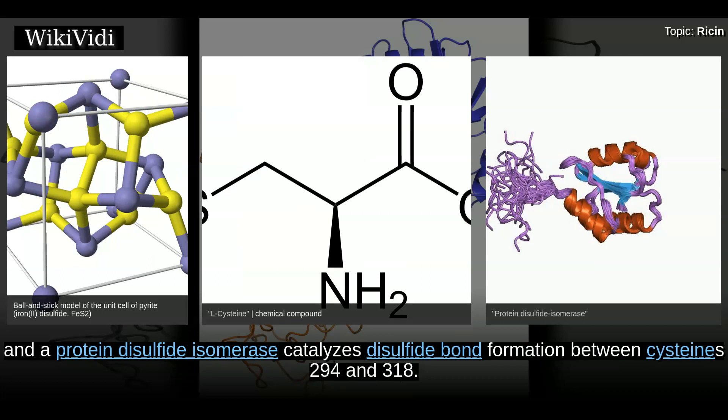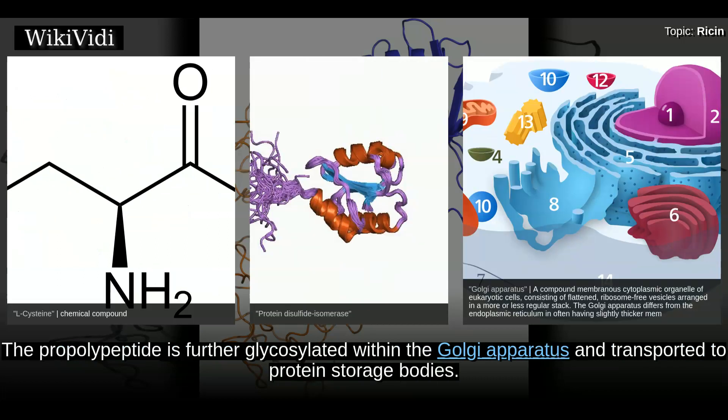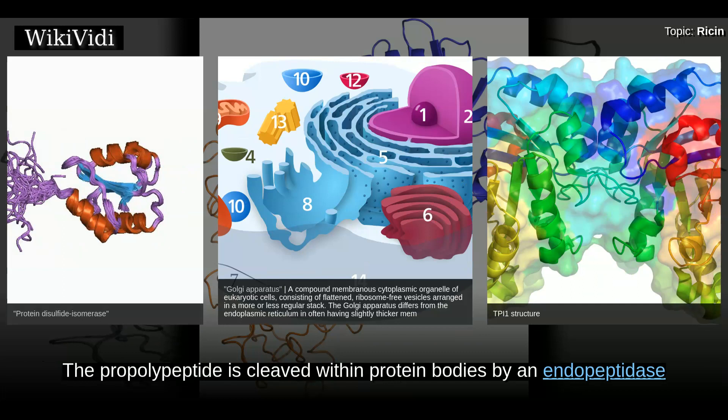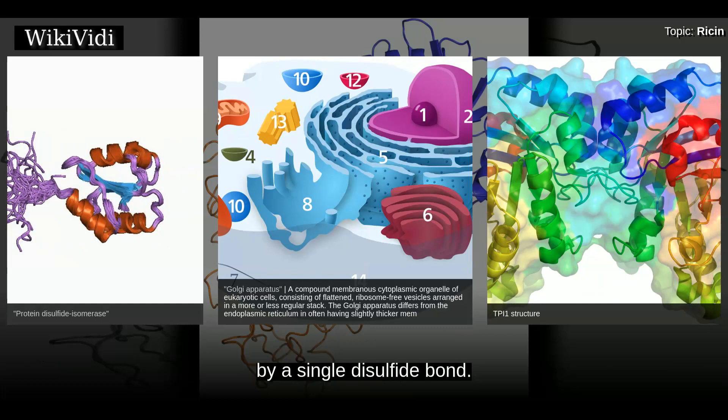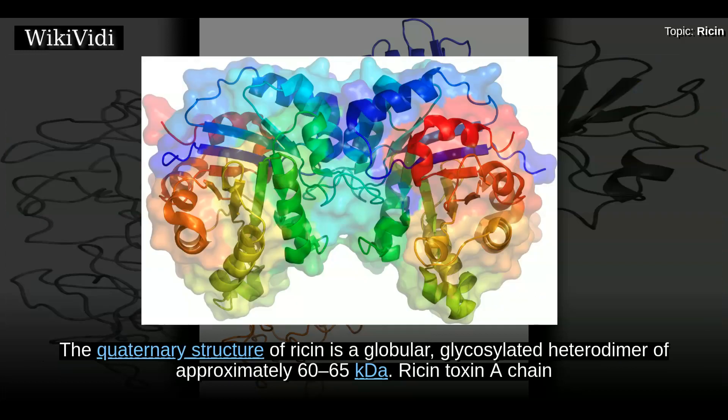Within the lumen of the ER, the propolypeptide is glycosylated and a protein disulfide isomerase catalyzes disulfide bond formation between cysteines 294 and 318. The propolypeptide is further glycosylated within the Golgi apparatus and transported to protein storage bodies. It is then cleaved by an endopeptidase to produce the mature ricin protein composed of a 267-residue A chain and a 262-residue B chain, covalently linked by a single disulfide bond.